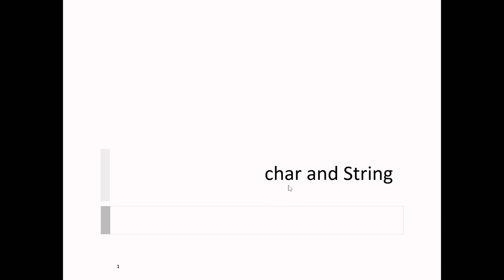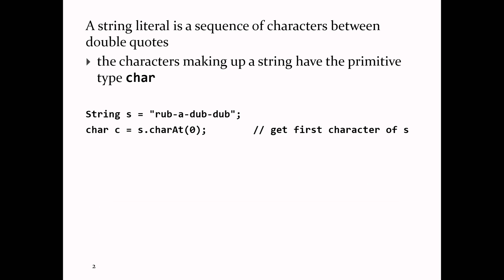Strings are made up of chars in Java. A string literal is just a sequence of characters — each individual character is called a char. String is a reference type, but the elements managed by a string are all of primitive type. Java strings are similar to C-style strings; internally there may be some array that holds the characters, but the Java string class is quite a bit more complicated than that.